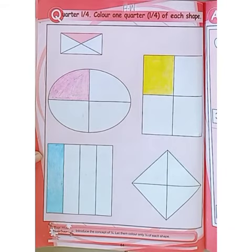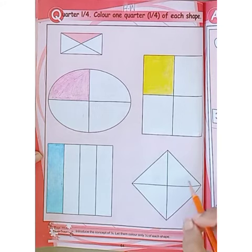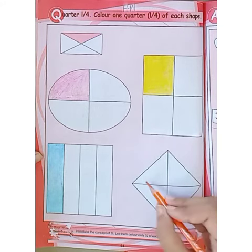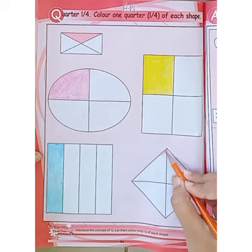Move on to the next one. This is a square shape and it has also four parts. We just have to color the quarter of this shape. Color it.